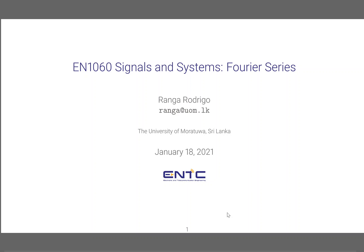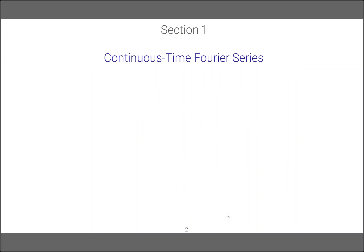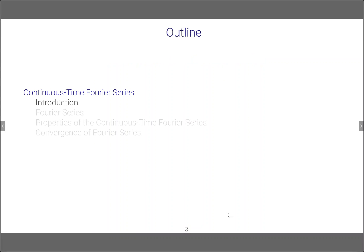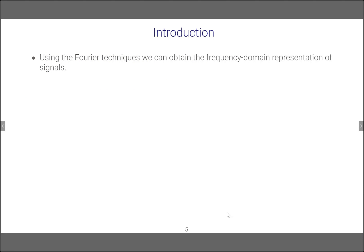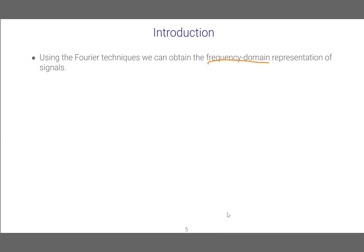Welcome everyone. We will study about the Fourier series. Under this, we will introduce what Fourier series is, understand how to compute the Fourier series, and next time we will understand the properties and convergence of the Fourier series. Using Fourier series techniques, we can obtain frequency domain representations of signals. We know there is a time domain representation with independent variable T, and the same signal can be represented in the frequency domain with independent variable omega.